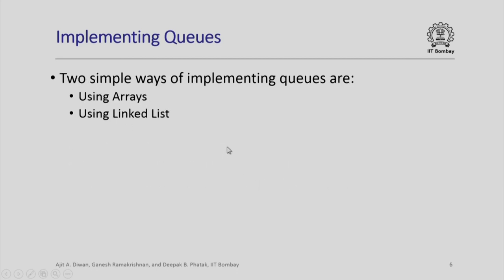Once again, we will be discussing two simple ways of implementing queues: one using arrays and another using linked lists. We have already seen how to use these two structures, arrays and linked lists, to implement stacks. So you will have no difficulty in understanding how queues are implemented using these two structures. We shall see these implementations in the two subsequent sessions. Thank you.